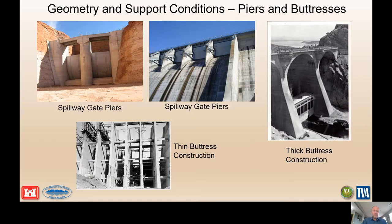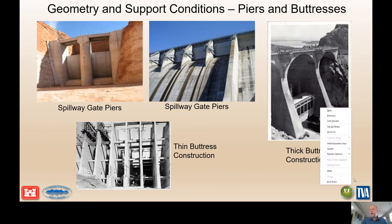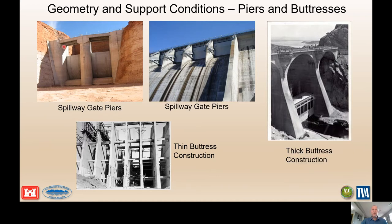We'll start with geometry and support conditions. Having worked on hydraulic structures for about 30 years, one good thing is that there's nothing cookie-cutter about them — there are all different kinds of shapes, sizes, and support conditions. In the upper left-hand corner here is Glen Canyon Dam, a very thick structure with thick piers for the spillway structure.